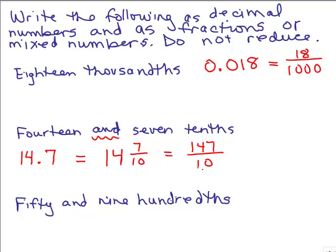Now there's an easier way to go directly from a decimal to an improper fraction. You simply write the number without the decimal point. So you see 147. You simply write 147 for the numerator. And then you see how many digits are after the decimal point. There's only one. So you write one with one zero and you go directly to 147 tenths.